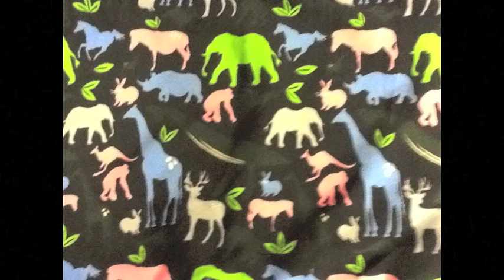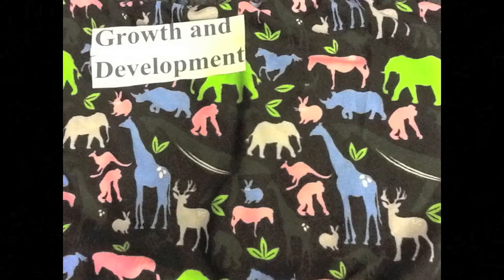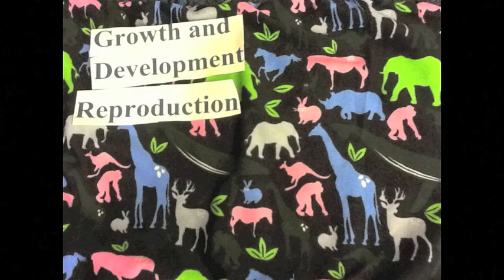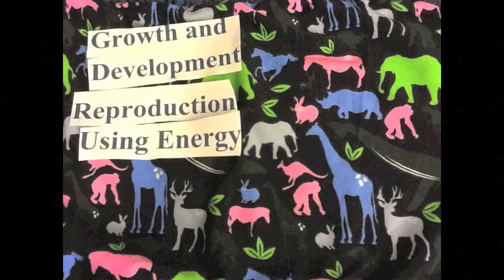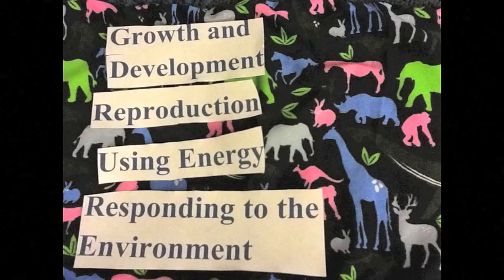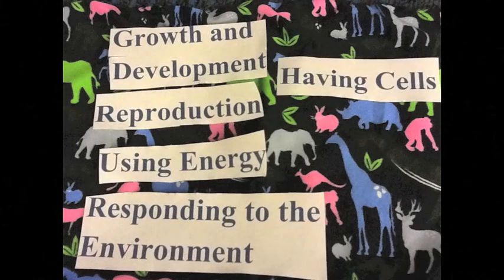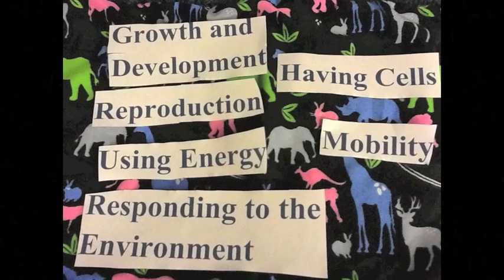There are six things that scientists use to classify if something is living or not. The first is growth and development. Then we will move on to reproduction. Next will be how the subjects use energy. We will examine how the subjects respond to the environment. We will also see if our subjects have cells and if they move.